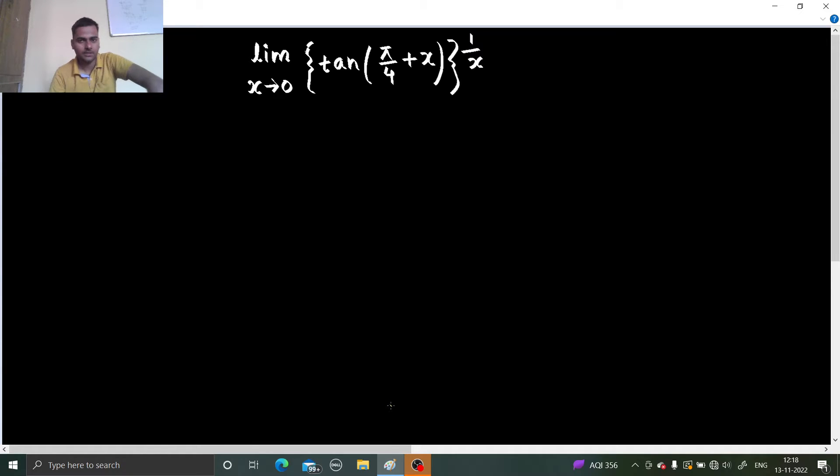First thing which we will do is to check the form. So if you take x as 0, you are going to get tan(π/4) which is 1 and in power 1 upon 0 is infinity. So this is 1 power infinity form.